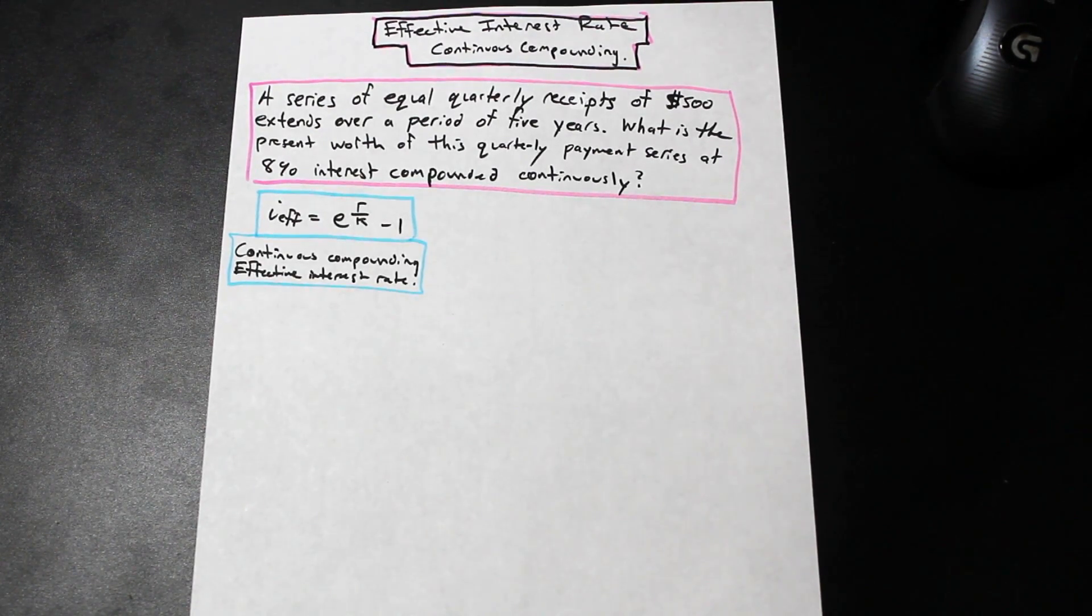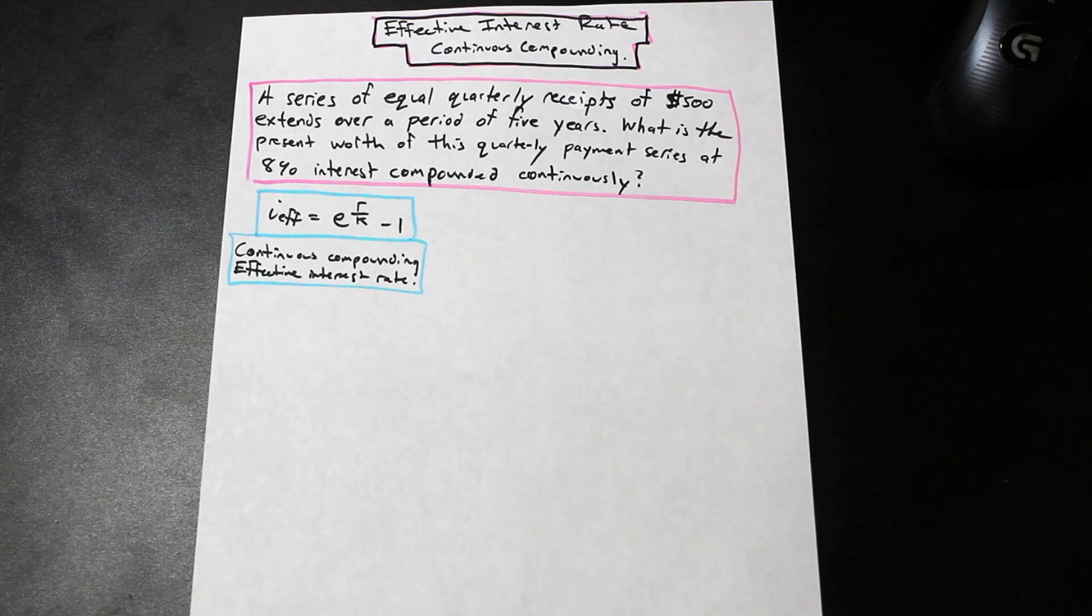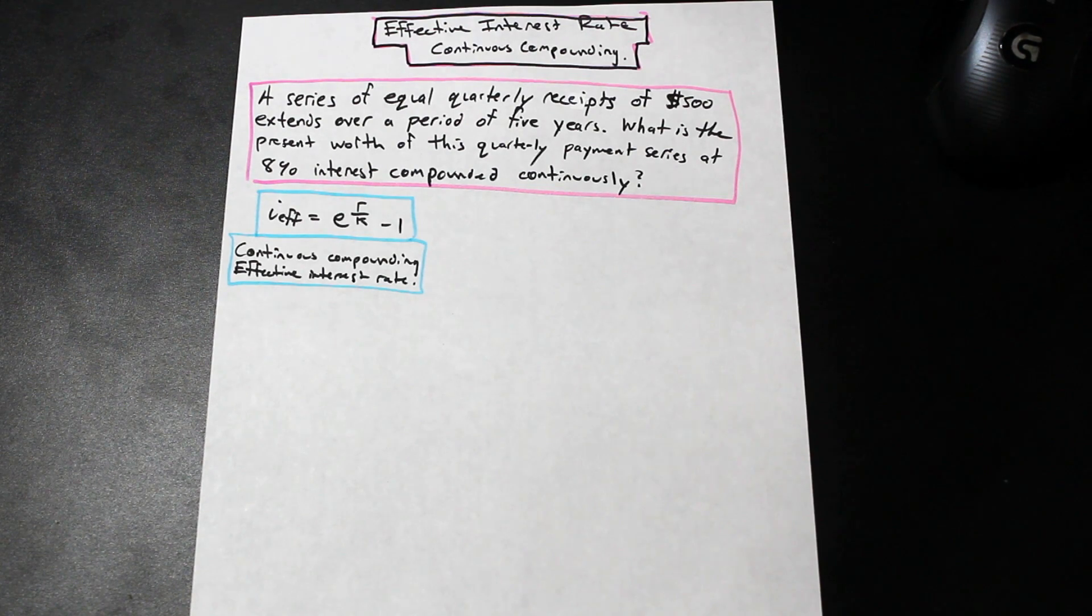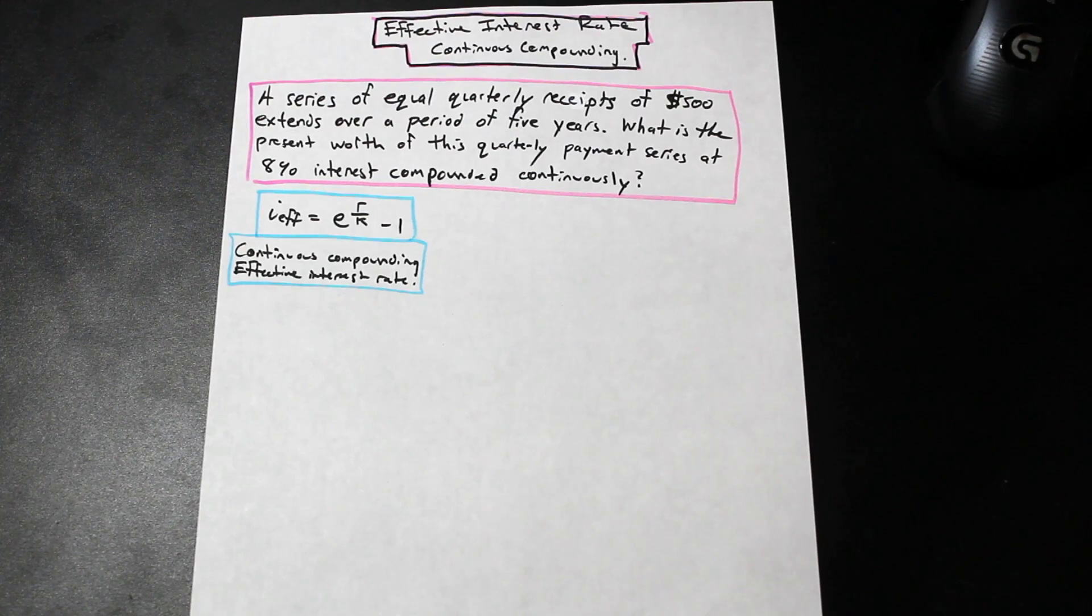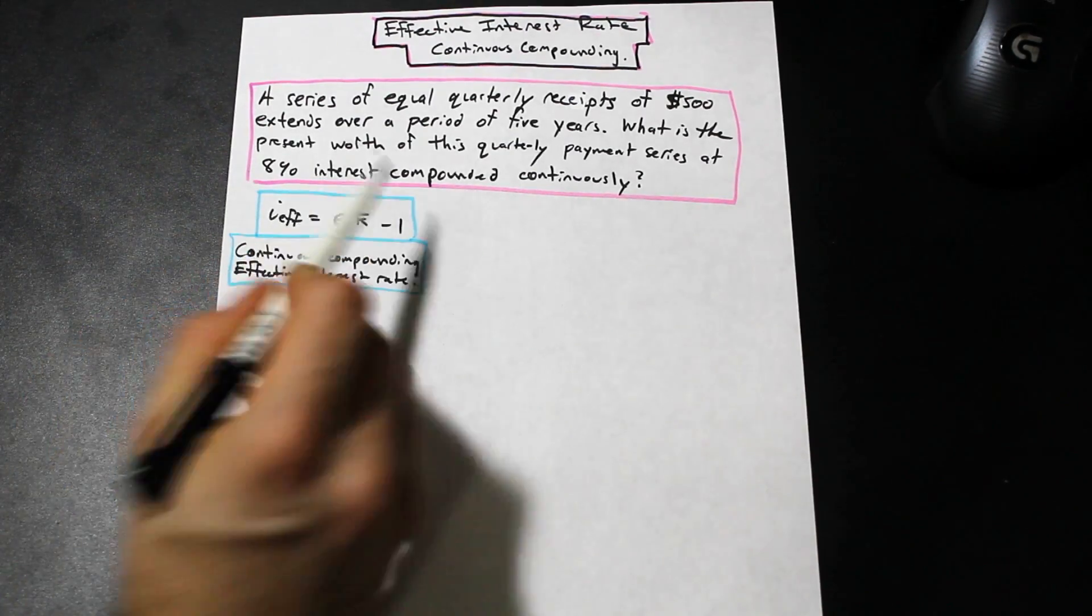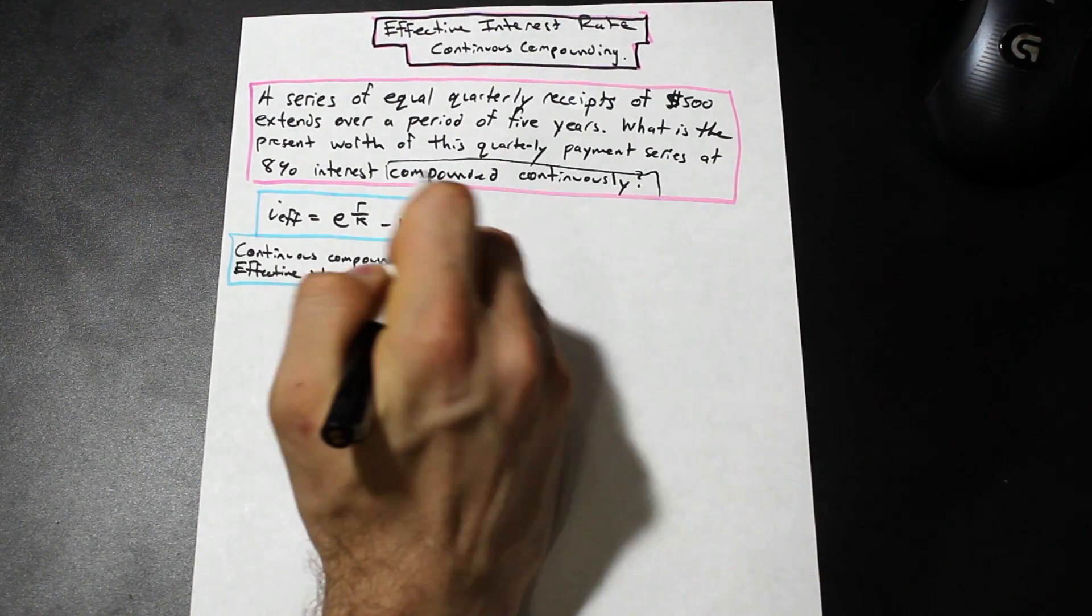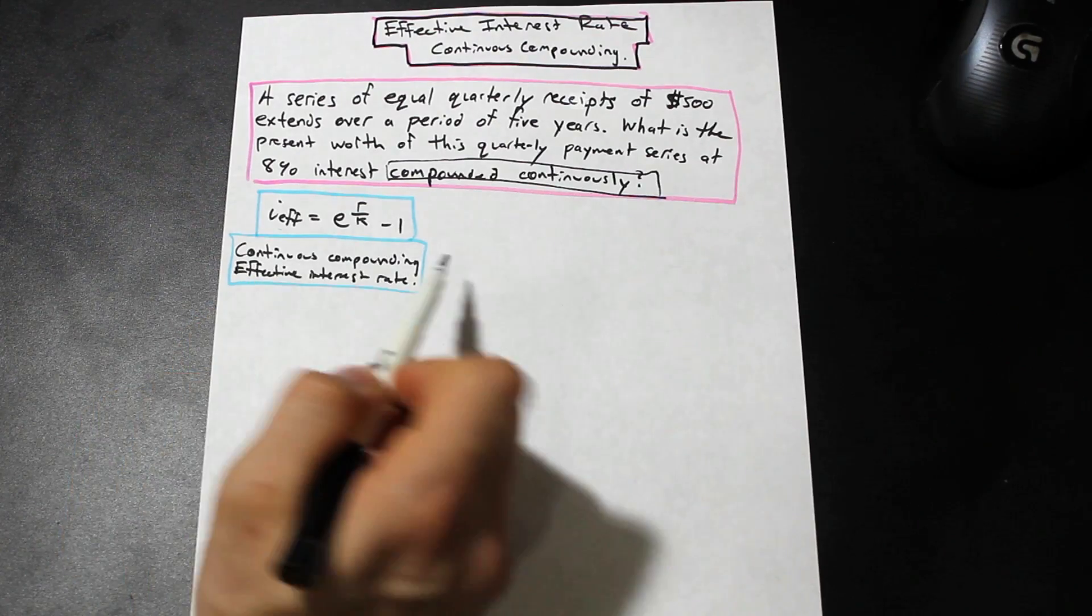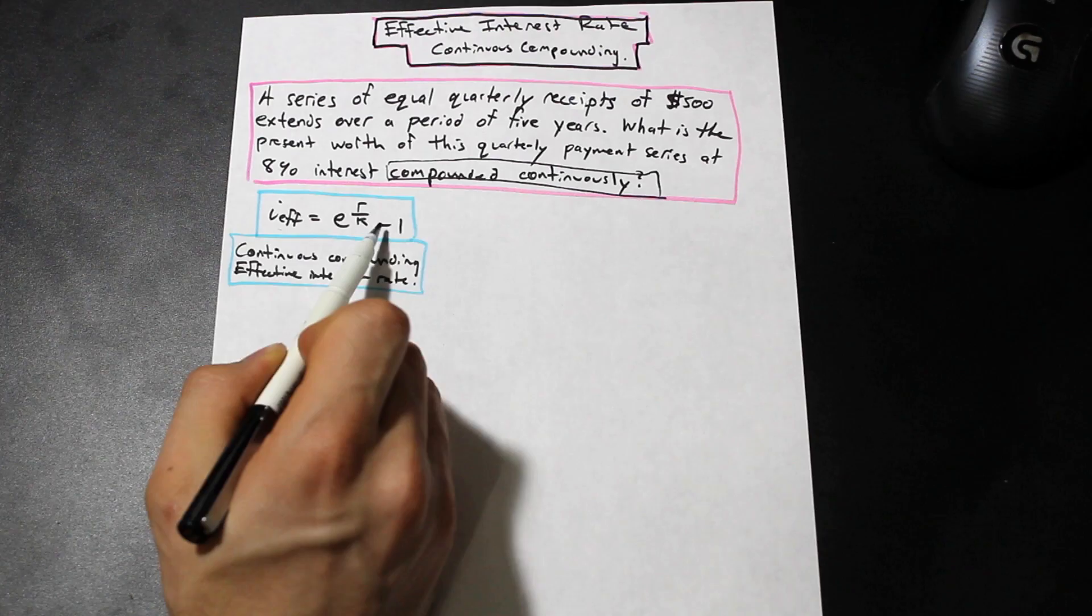So let's take a look at this question. We'll practice how to evaluate the effective interest rate when the compounding is continuous. A series of equal quarterly receipts of $500 extends over a period of five years. What is the present worth of this quarterly payment series at 8% interest compounded continuously? So whenever you see compounded continuously, you immediately need to go to the formula which is the continuous compounding effective interest rate formula, and we have e to the r divided by k minus 1.